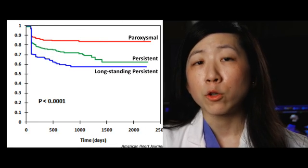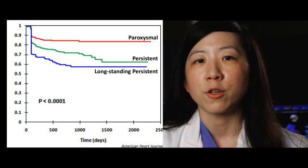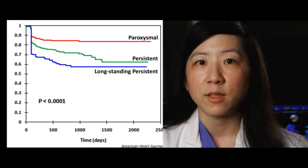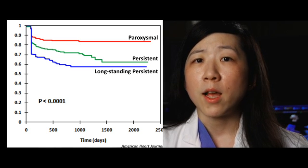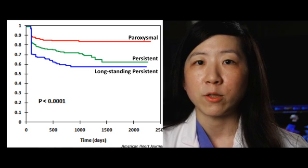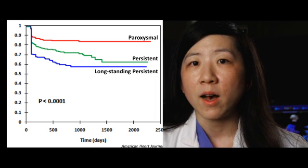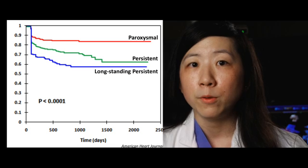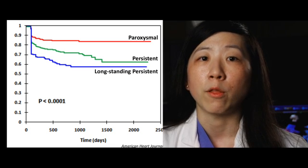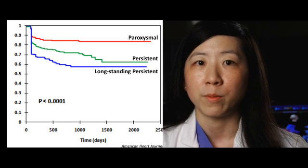Let's take a look at a figure our group published in the American Heart Journal on the long-term results of our atrial fibrillation ablations. The red line represents patients with paroxysmal atrial fibrillation, while the green line represents patients with persistent atrial fibrillation, and the blue line represents patients with long-standing persistent atrial fibrillation.